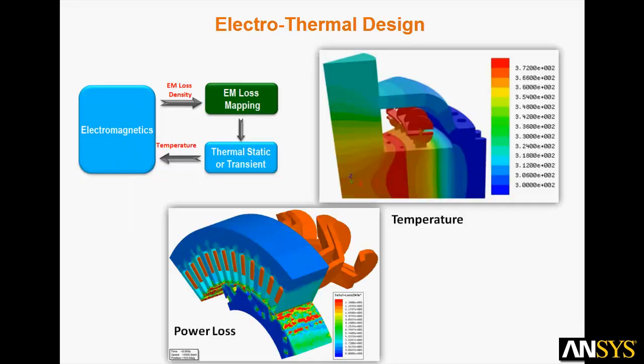The first step is electrothermal design. Maxwell is used to simulate electromagnetic fields and the associated electromagnetic power loss density. Automated routines map these losses to the ANSYS CFD, Computational Fluid Dynamics Solver, for static or transient thermal simulations. The resulting temperatures from the thermal analysis can be passed back to Maxwell to adjust material properties so that additional corrections to the electromagnetic field may be computed.